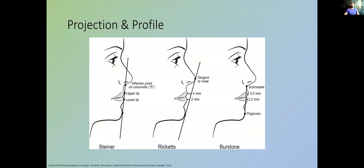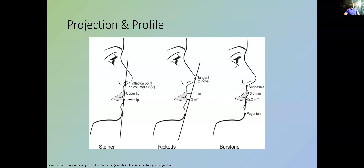Regarding projection and profile: Steiner's lines and Rickets' lines assess the projection of the nose and its relation to inferior structures — the lips as well as the chin. But remember, not one rule fits all. If somebody has a very prominent nose, you're not going to try and make their lips and chin equally large — everything in moderation.